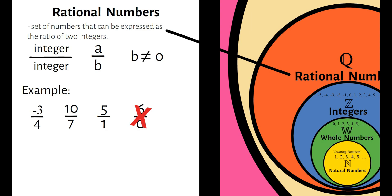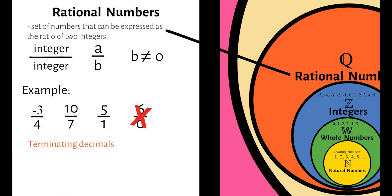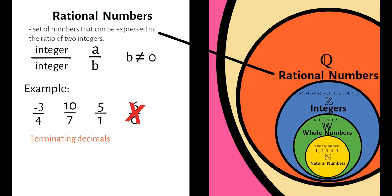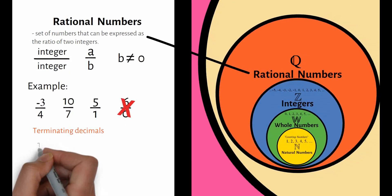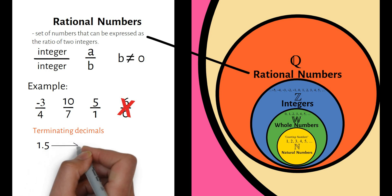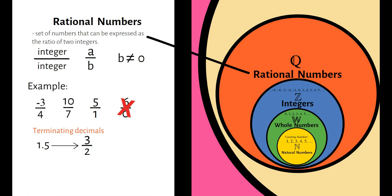Another example of rational numbers are terminating decimals. These are decimals that has an end. Example, 1.5 — makukonsider natin ito as rational number dahil pwede natin itong i-convert into fraction 3 over 2. Another example is 0.5, or in fraction form 1 over 2.